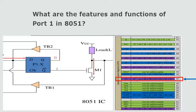Let us discuss about the features and functions of Port 1. The address of Port 1 is 90H. Port 1 has one D-latch, two unidirectional buffers, one FET, and one internal pull-up resistor at each pin. It has only one function: to act as an input-output port. When Port 1 is functioning as input port, a digital 1, i.e., FFH, is written to the latch at 90H. This turns off the transistor, the pin floats in high impedance state, and connects to the input buffer. When functioning as output port, the latch is given a low signal, i.e., 00H, turning the FET off, and the port is used as output.